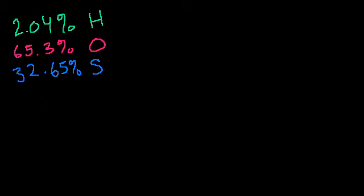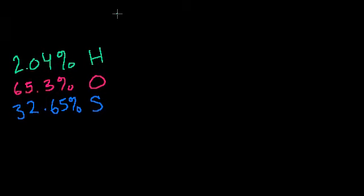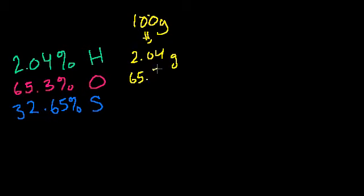So what we do, like we do in all of these problems, let's just assume we've got 100 grams of the stuff. So if I have 100 grams, how many grams of hydrogen do I have? If I have 100 grams total, 2.04% of that is hydrogen. So I have 2.04 grams of hydrogen. I have 65.3 grams of oxygen, and I have 32.65 grams of sulfur.